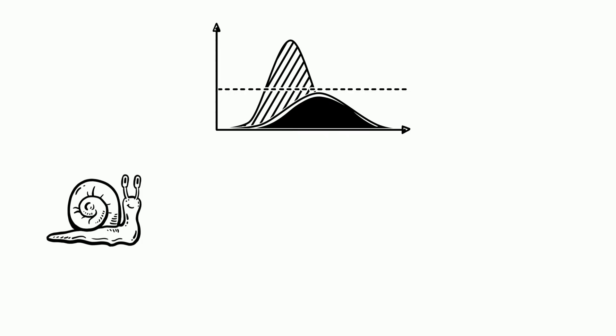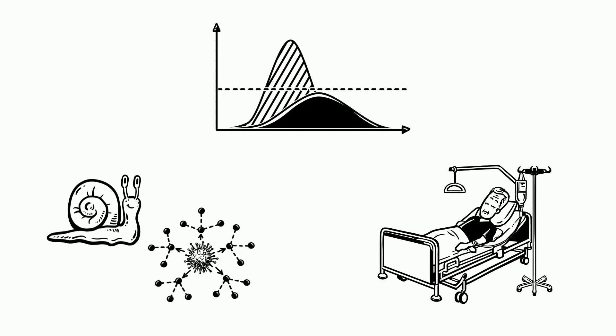Well, when someone refers to flattening the curve, it means slowing the virus's spread so that fewer people need to seek treatment all at once. The curve in this case is an estimate of cases over a given period of time.